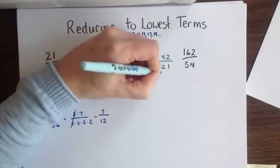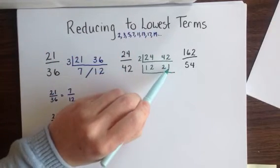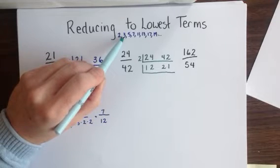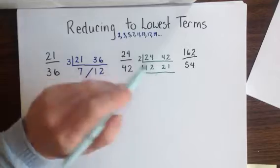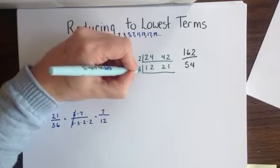Since one of my dividends is now an odd number, I can no longer divide by 2. So I recall the rule for 3's. Since 3 is a multiple of 12 and also a multiple of 21, I'm going to divide by 3 next.